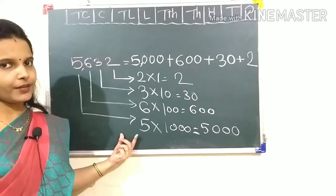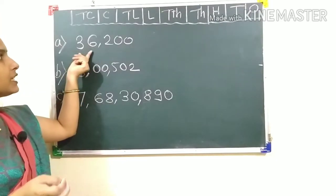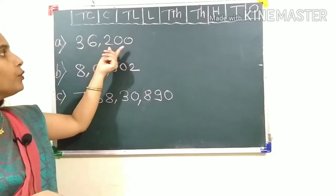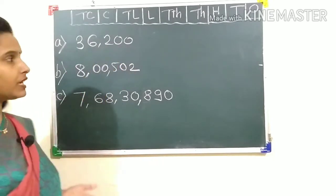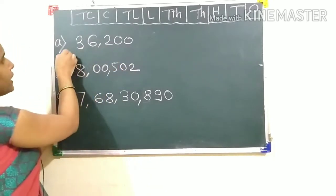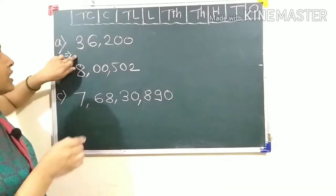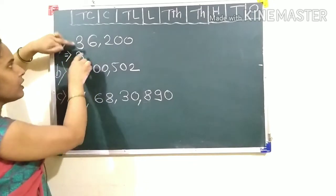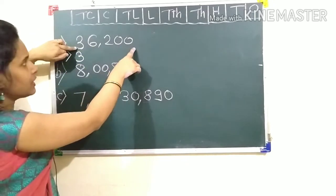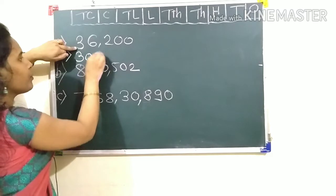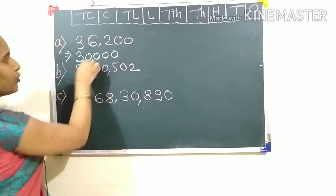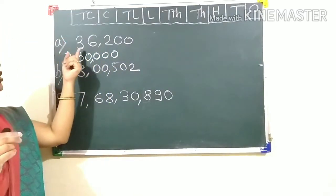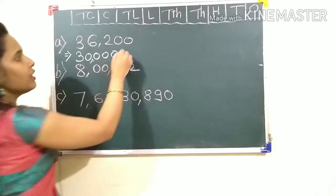Next example is 36,200. You have to write the number in expanded notation. So first, you have to read the number. I will write the answer here. This is the place value of three, 30,000.